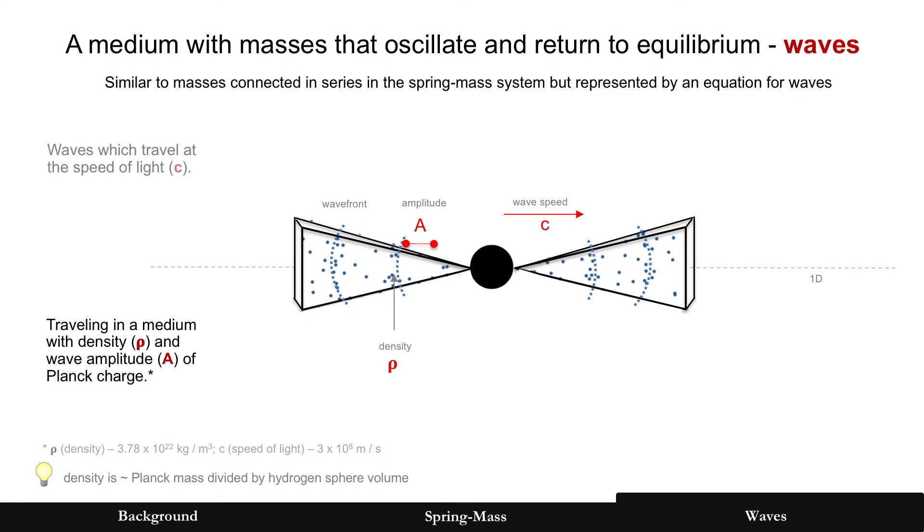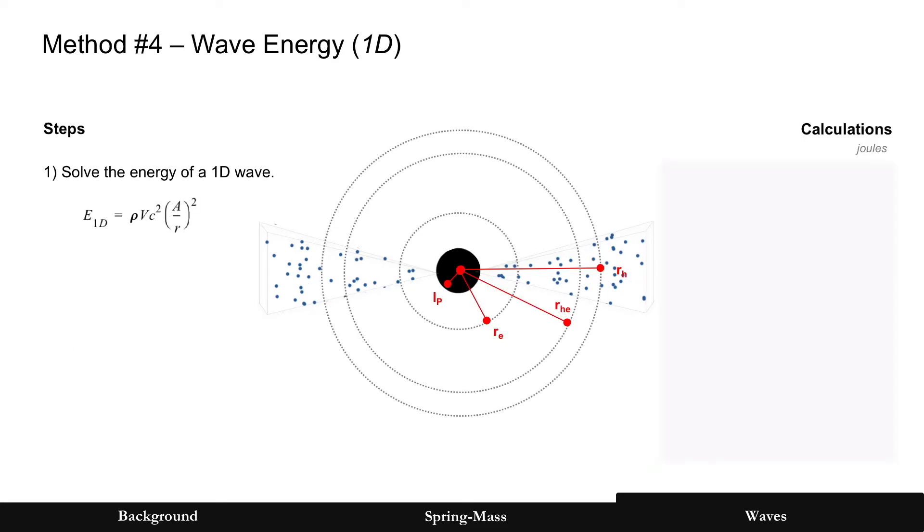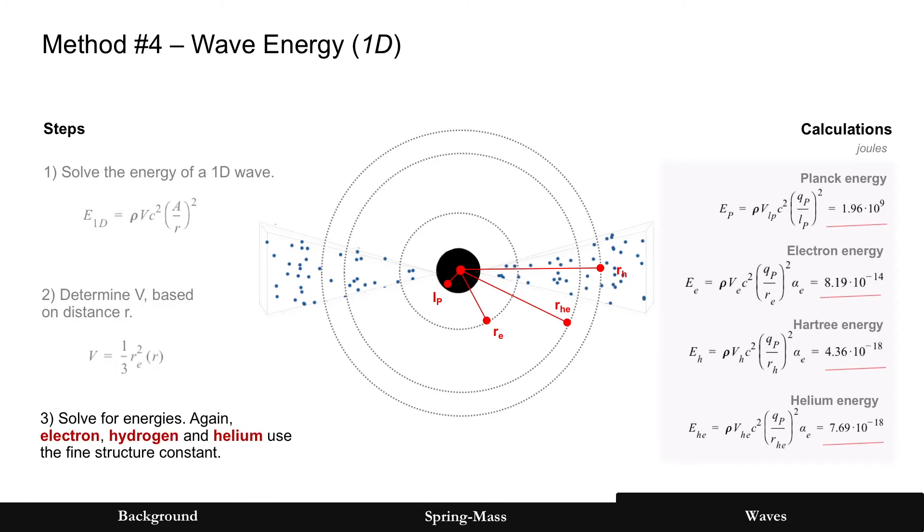They'd be traveling in a medium with a known density. And by the way, this is about the same thing as the Planck mass divided by the hydrogen sphere earlier. This is the density. And the amplitude remains of Planck charge. But now we're going to measure it in a volume. That's a longer explanation of why this volume is a pyramid. You can see that. Go to the paper for those details. But using that volume, here's the energy equation, at least in 1D view. So we're going to use that equation for method number four. Solve for volume. It's based on that distance r. You solve that equation again for all four. Sure enough, exact same values, but now using a wave equation.